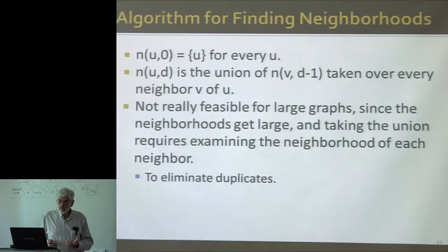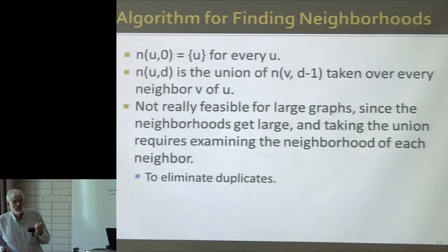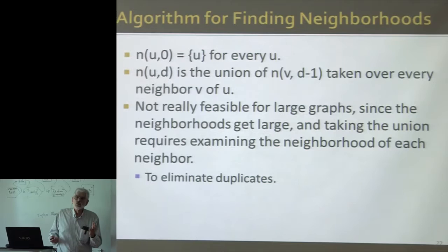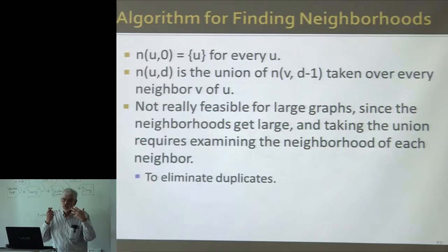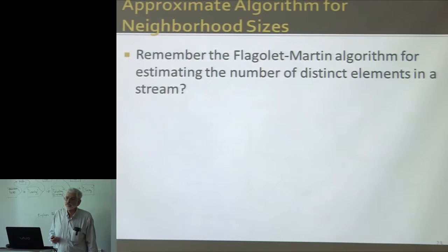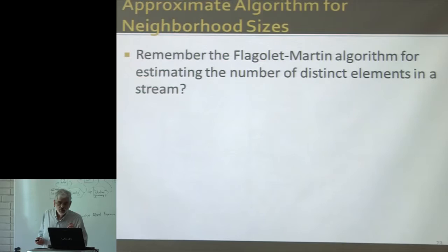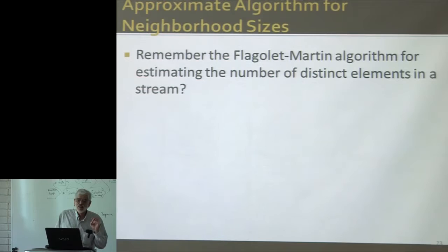If all we want to do is count these neighborhoods, there's got to be a better way. If you want an exact count, you have to maintain those sets exactly and compute the unions exactly. But if all you want is a count, you can actually use the Flajolet-Martin algorithm in a different way — it has nothing to do with streams — to estimate the sizes of neighborhoods at various distances. So I'm just going to set up the recurrence.